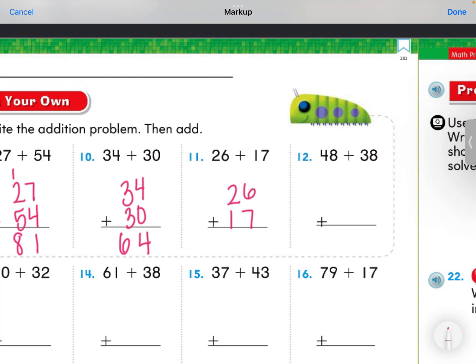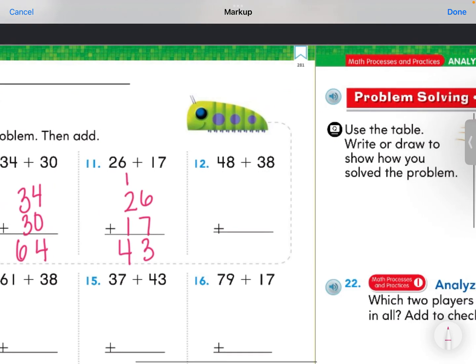I'm going to line up 26 and 17. I'm going to add my ones. 6 ones plus 7 ones, 13, which has 1 ten and 3 ones. I'm going to add my tens. 1 plus 2, 1 ten plus 2 tens is 3 tens. 3 tens plus 1 more ten is 4 tens. Number 12, 48 plus 38. I'm going to add my ones. 8 plus 8, that's a doubles fact that gets me to 16. I'm going to put that 1 with the 3 tens. So 1 ten plus 3 tens would be 4 tens. I know that 4 plus 4, or 40 plus 40 is 86.